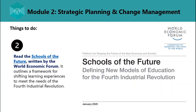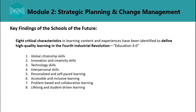The second thing you need to do is read Schools of the Future. Its key findings include eight critical characteristics of high-quality learning in the fourth industrial revolution, called Education 4.0. Number one is Global Citizenship Skills — content that focuses on building awareness about the wider world, sustainability, and playing an active role in the global community. Number two is Innovation and Creativity Skills — content that fosters complex problem solving, analytical thinking, creativity, and systems analysis.